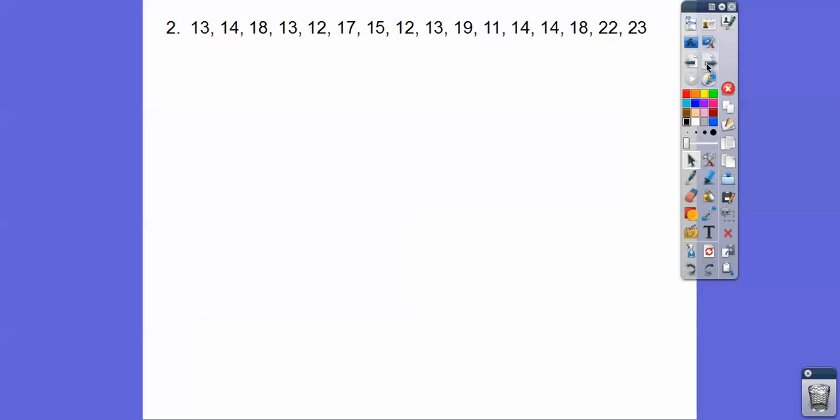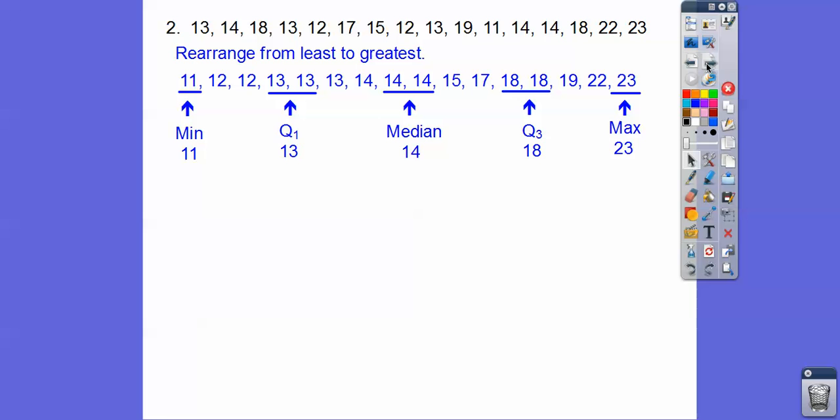Here's another one. We got all these numbers, let's rearrange them in order. I think there's 20 numbers there, so the 10th and 11th will be the median. And then the quartiles will be the 4th and 5th one in. There's the quartiles: quartile 1, quartile 3. Here's the max.